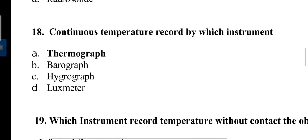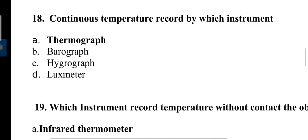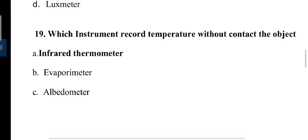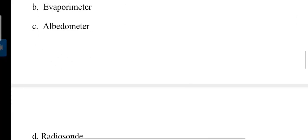Question: Continuous temperature recorded by which instrument? That is thermograph. Next, which instrument records temperature without contact with the object? That is infrared thermometer, which is mostly used in remote sensing and we can measure temperature of the forest from this method.